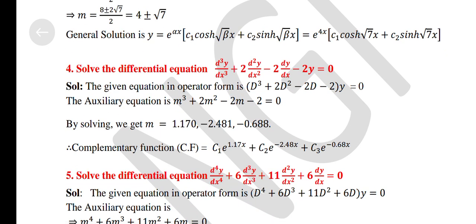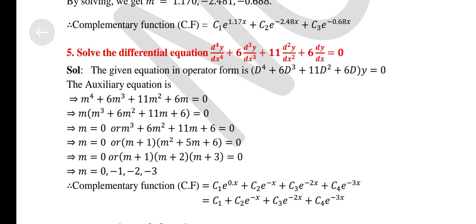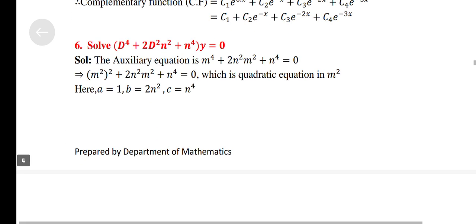Solve the differential equation: d³y/dx³ + 2 d²y/dx² − 2 dy/dx − 2y = 0. Solve: d⁴y/dx⁴ + 6 d³y/dx³ + 11 d²y/dx² + 6 dy/dx = 0. Solve: (D⁴ + 2D²n² + n⁴) y = 0.